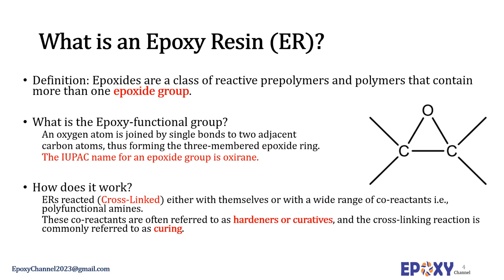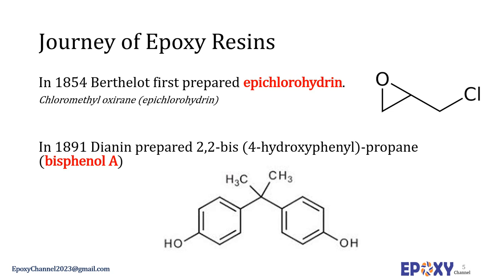Now let's talk about the history of the invention of epoxy resins. The journey of epoxy resins began with the discovery and synthesis of epichlorohydrin in 1854 by Berthollet. The chemical structure of epichlorohydrin, or ECH, is presented here for your reference. Epichlorohydrin was prepared by making glycerol react with phosphorus trichloride.